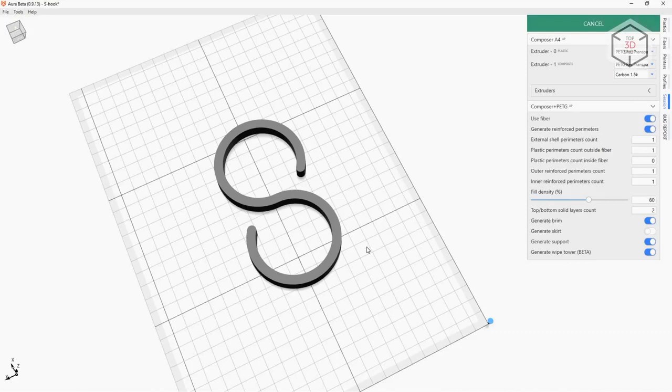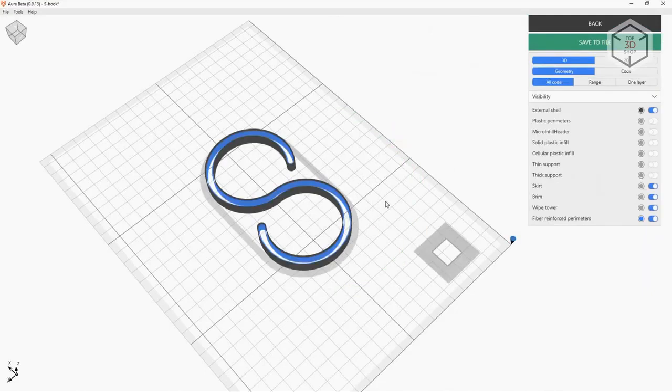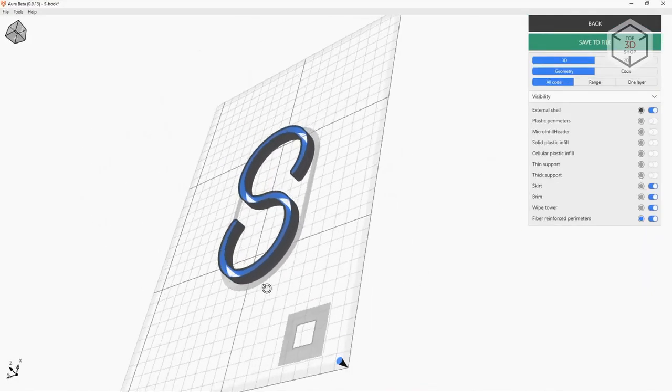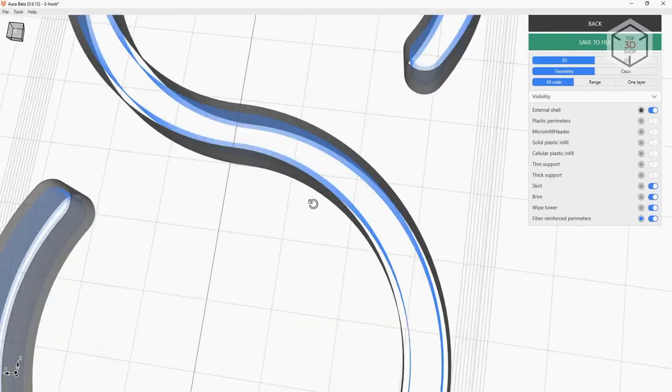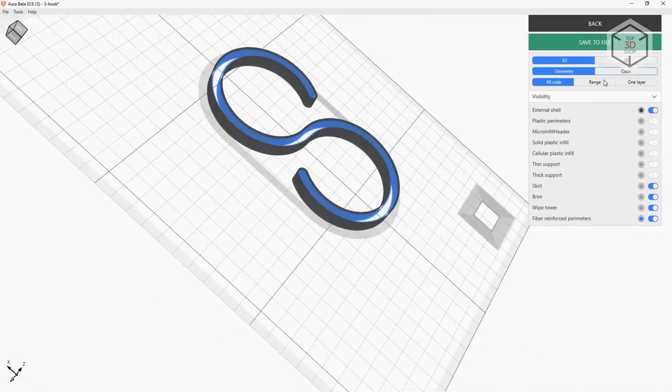The proprietary Aura software, developed by Anisoprint, will allow to easily customize and adjust the printing settings of internal and external elements of a model, and select parameters for working with carbon fiber and raw thermoplastic.